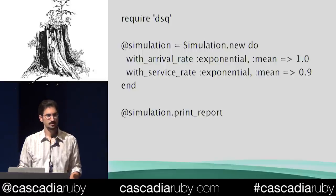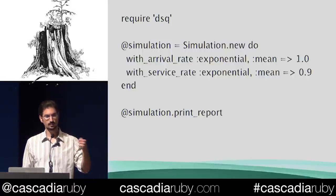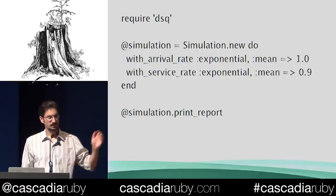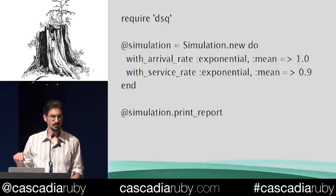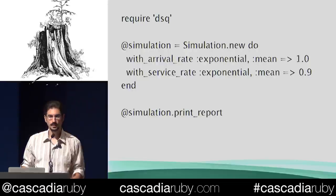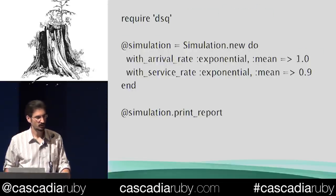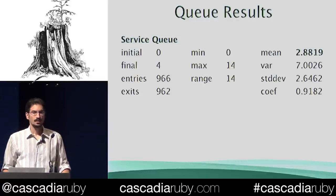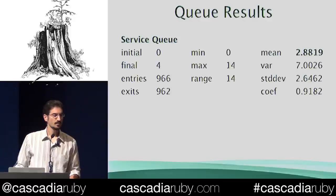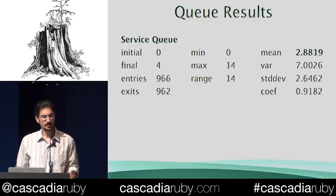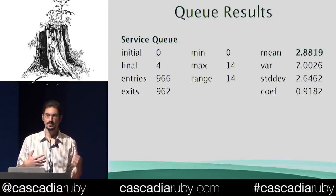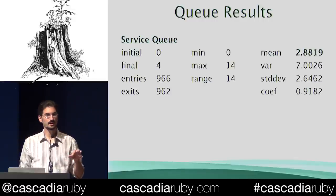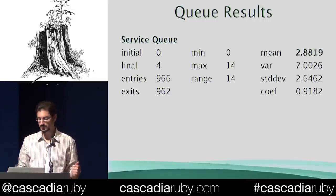I'm not going to talk about DSQ too much, so I'll just show you that it is indeed simple. You require DSQ — it's a DSL within Ruby. You can create a new simulation. It only has one node, so it has an arrival rate distributed along some exponential curve, a service rate — the time it takes to service a request — distributed along some exponential curve. Then it will run for a default of 60 units of time and print a report. A report might look something like this — again, numbers. You can see that initially there was nothing in the queue; when I stopped it, there were four things in the queue, and about 1,000 things went through it. You can use this to simulate events going through a system, possibly a distributed system. But it's hard to visualize it.